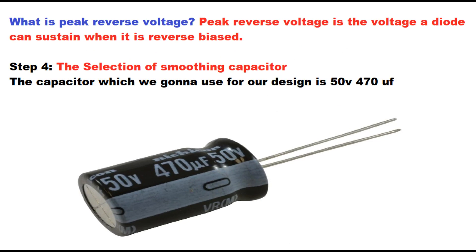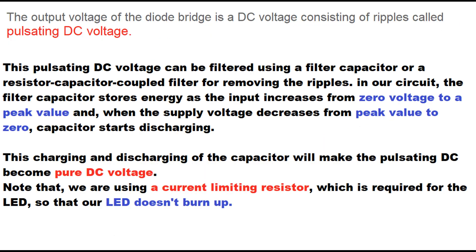Step 4: The selection of smoothing capacitor. The capacitor we are going to use for our design is 50 volts, 470 microfarads. The output voltage of the diode bridge is a pulsating DC voltage consisting of ripples. This can be filtered using a filter capacitor. The filter capacitor stores energy as the input increases from 0 to a peak value, and when the supply voltage decreases from peak to 0, the capacitor starts discharging. This charging and discharging makes the pulsating DC become pure DC voltage.